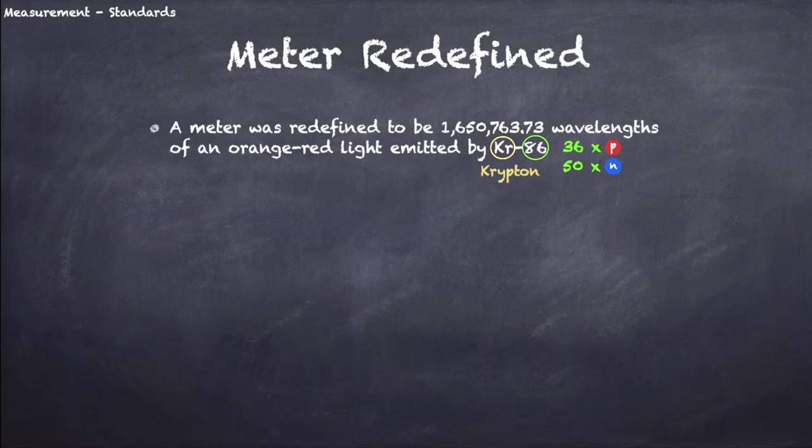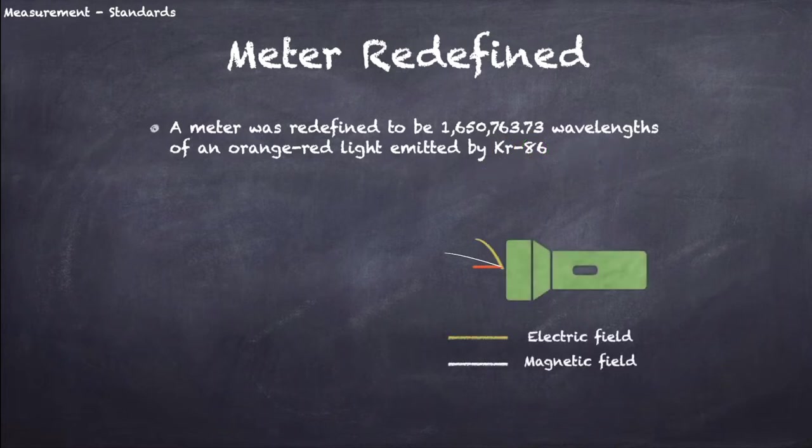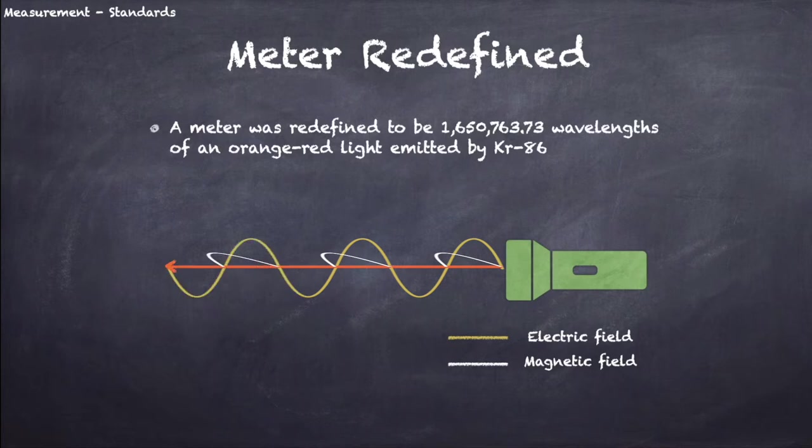KR86 can emit an orange-red light. Lights can be modeled as a wave of electric field and magnetic field, which we'll learn in the next course. That's something cool to look forward to. Anyway, every wave has a wavelength. A wavelength is the distance between two adjacent crests of the wave. The wavelength of these Krypton lights is very, very small. That's why it takes about 1.7 million of them to make up for 1 meter.